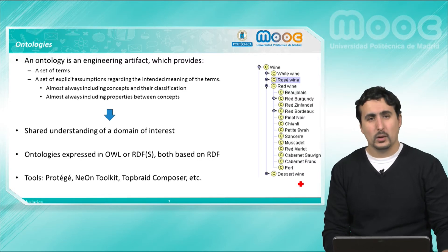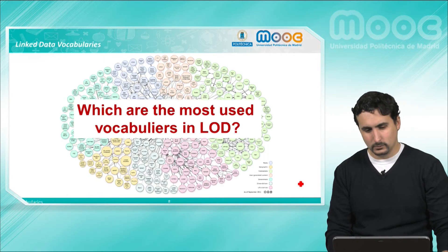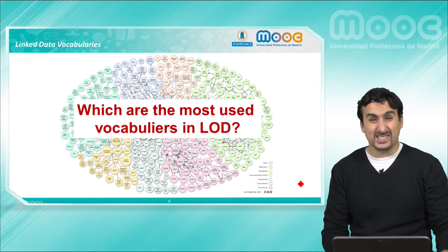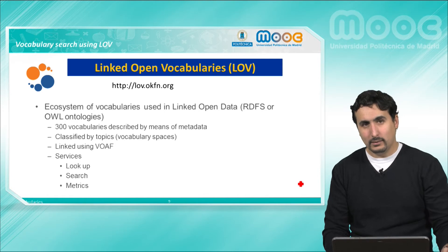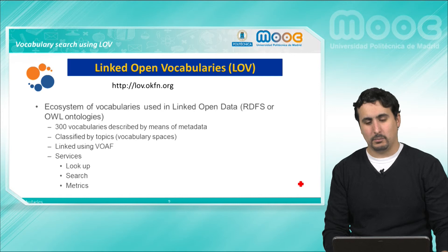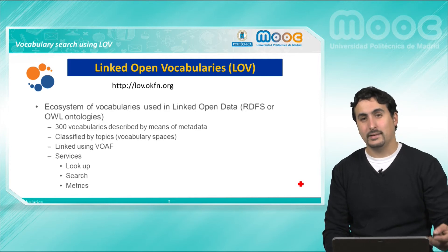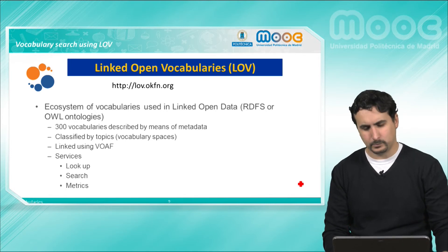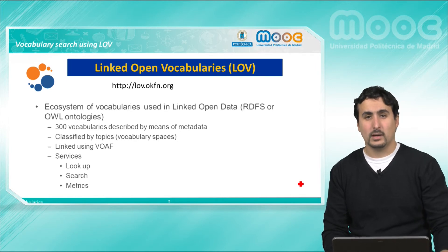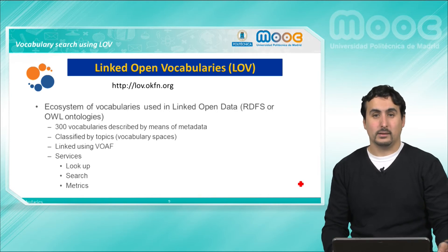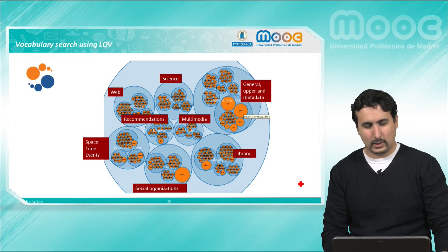For building ontologies and vocabularies we have different tools such as, for example, Protégé, which is the most used one, Neon Toolkit, TopBraid Composer, and many others. So what is the role of vocabularies or ontologies in Linked Data, and which are the most popular vocabularies in terms of usage? For discovering that, as well as to get information about popular vocabularies, we can use portals such as the Linked Open Vocabularies portal. LOV is an ecosystem that exposes information about more than 300 RDF and OWL ontologies used in different Linked Open datasets. These vocabularies are classified under different categories depending on the domain they cover and are described using the VOAF vocabulary, which is itself a vocabulary for annotating information about vocabularies.